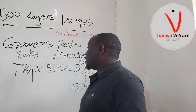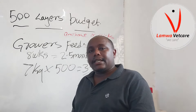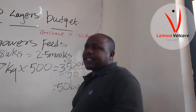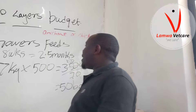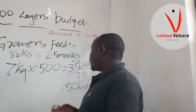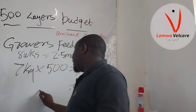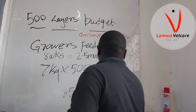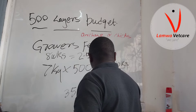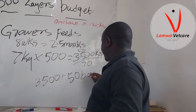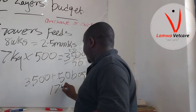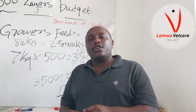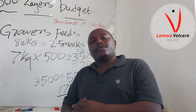50 bags of growers mash will last you 10 weeks until you get an egg. The cost of a 70 kg bag of growers feed at current market price is 3,500 shillings. 3,500 times 50 bags gives us 175,000 Kenyan shillings. With 175,000 Kenyan shillings you are able to raise your birds through the growers stage for those 10 weeks.